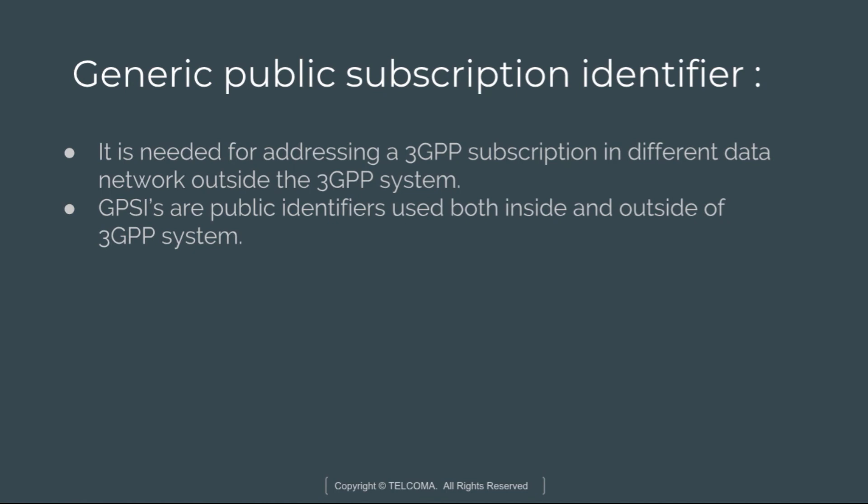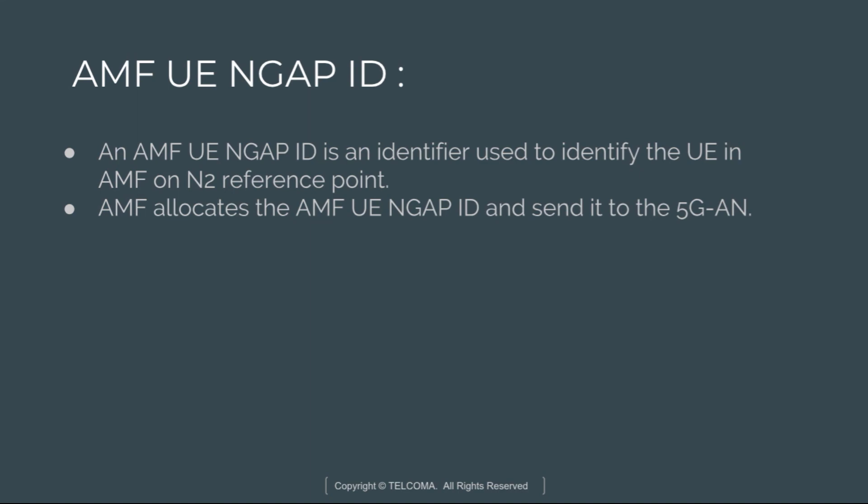Next is the Generic Public Subscription Identifier, or GPSI. GPSI is needed for addressing a 3GPP subscription in different data networks outside the 3GPP system. The 3GPP system stores within the subscription data the association between GPSI and the corresponding SUPI. GPSI are public identifiers used both inside and outside the 3GPP system, and it is either an MSISDN or an external identifier.